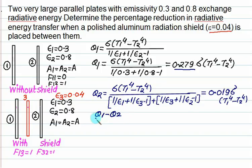The percentage reduction is (Q1 - Q2) / Q1 × 100 = (0.279 - 0.019) / 0.279 × 100. The final answer is 93.18% reduction in radiative heat transfer due to the shield.